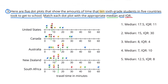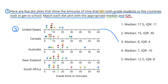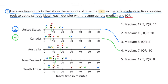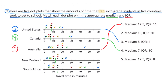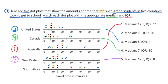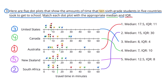Since all five countries' dot plots have different medians, we don't need to go any further to match them up. The United States matches up with a median of 8 and an IQR of 4. Canada matches up with a median of 7 and an IQR of 10. Australia matches up with a median of 17.5 and an IQR of 11. New Zealand matches up with a median of 12.5 and an IQR of 8. South Africa matches up with a median of 15 and an IQR of 30.